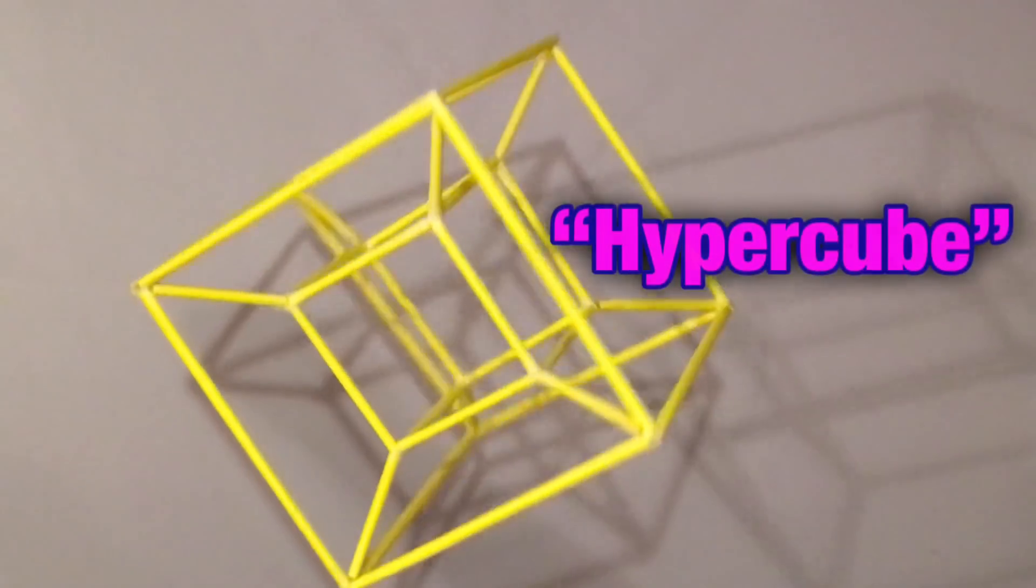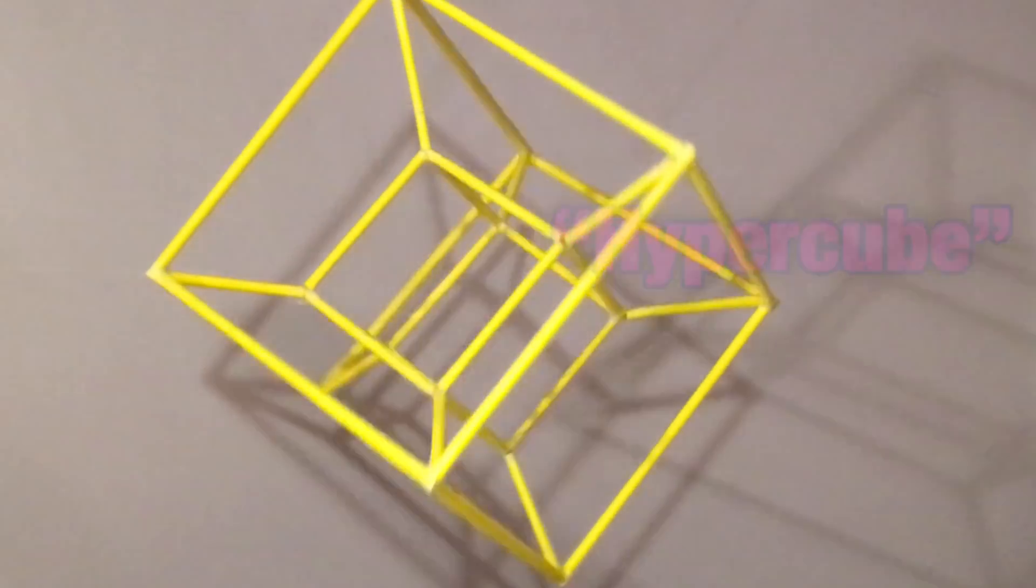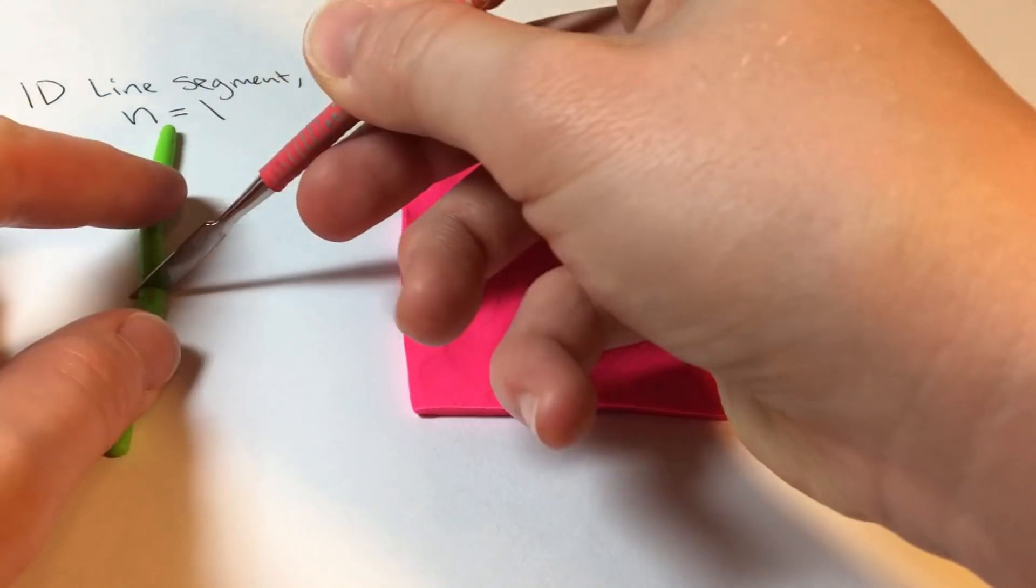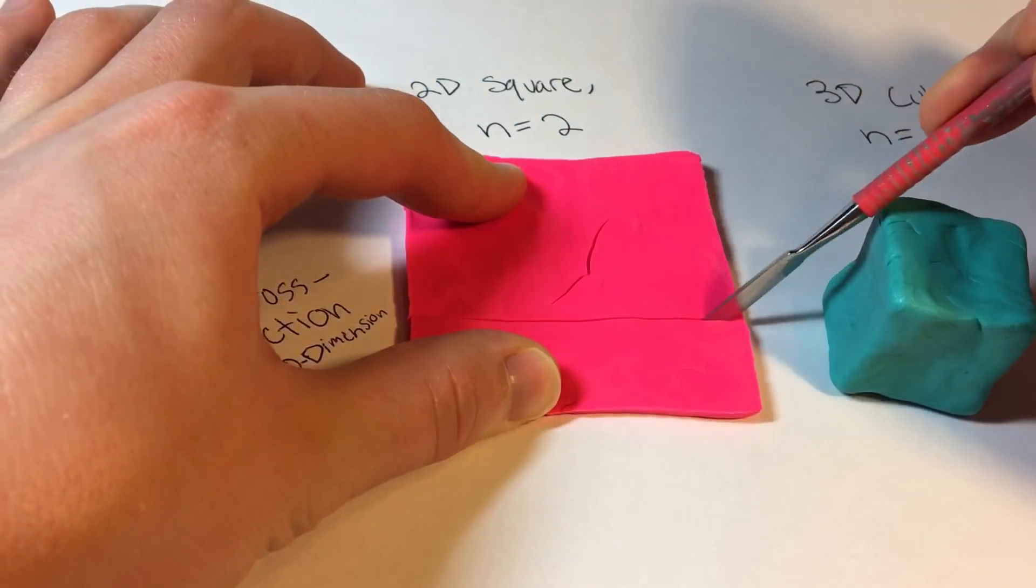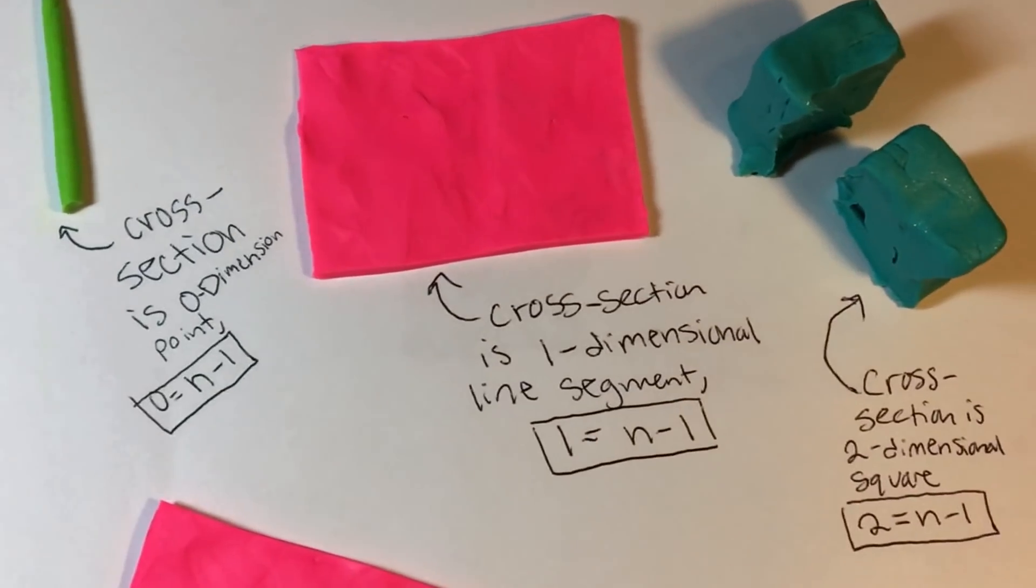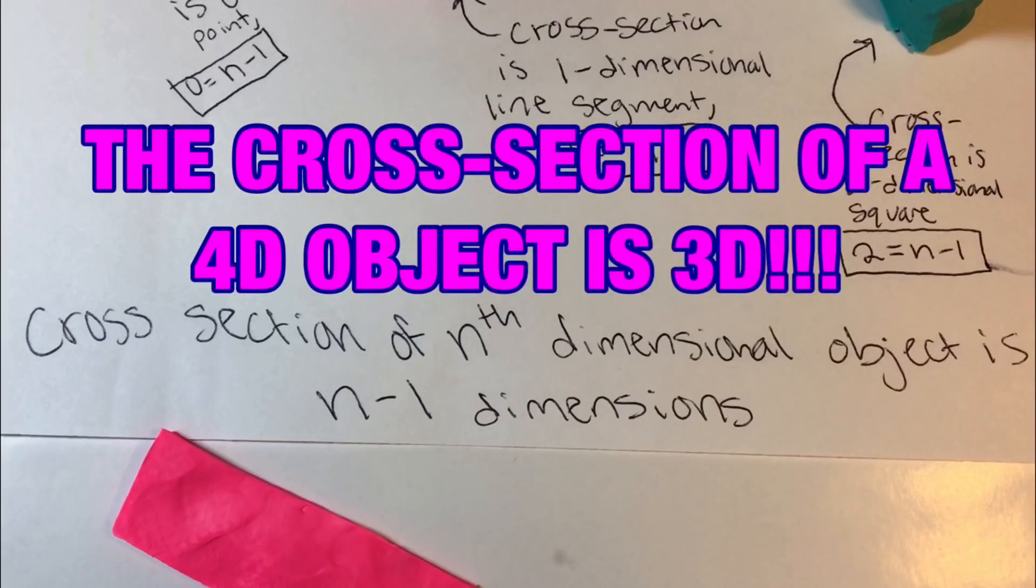So, following this pattern, a four-dimensional hypercube is made by placing an infinite number of three-dimensional cubes along a fourth perpendicular axis. If we were to slice any of these objects, we would see that the cross-section of an nth-dimensional object is n minus one dimensions. That means that the cross-section of a fourth-dimensional object is three-dimensional.